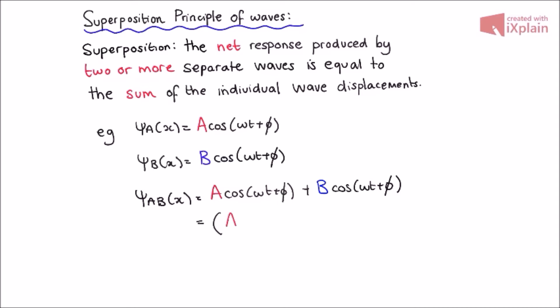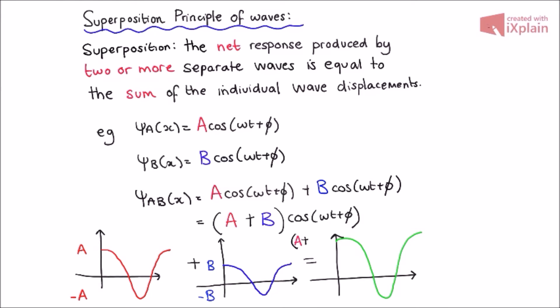Say we want to obtain the resultant wave produced by a and b, psi ab, when they oscillate with each other at the same time and place. To do this, we sum the individual waves together and produce a net wave function a plus b cos omega t plus phi.